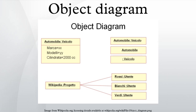An object diagram in the unified modeling language is a diagram that shows a complete or partial view of the structure of a modeled system at a specific time.